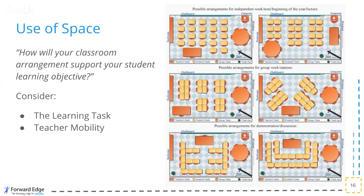When preparing students for the connected world and workforce they are entering, we must intentionally teach them how to work with a diverse range of people. The second point to consider when establishing your classroom arrangement is teacher mobility — the teacher wants to be able to get to each student quickly without obstacles. When teachers are actively circulating the room, kids not only feel more confident asking questions, but they are also less likely to get off task on other websites. Throughout the year, classroom configurations should change frequently to allow for the type of learning required by the learning task.